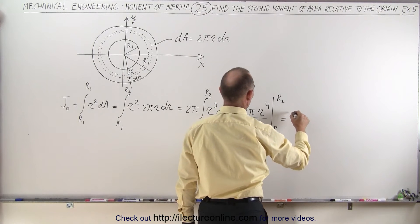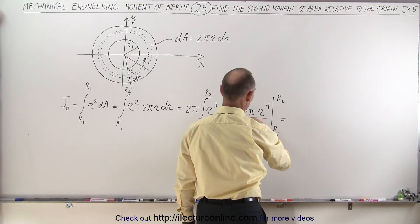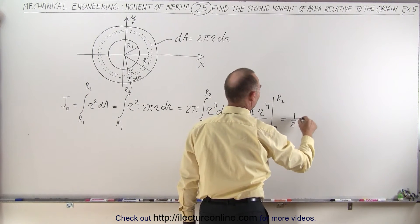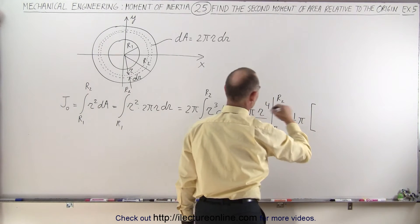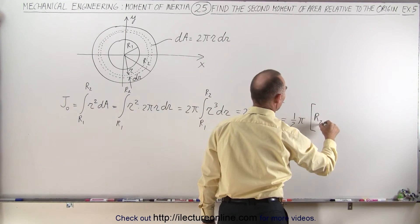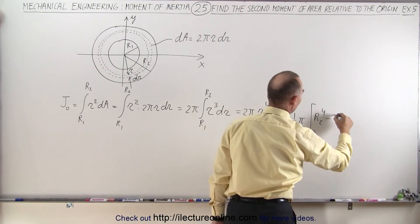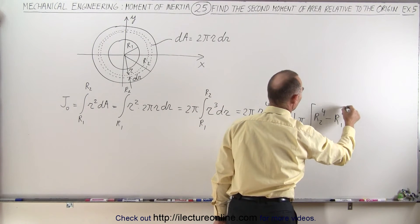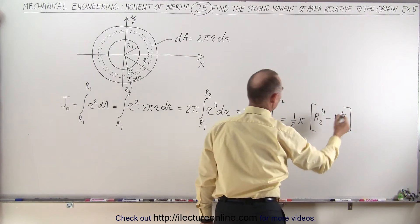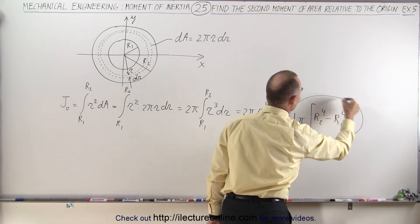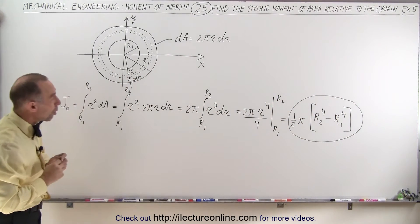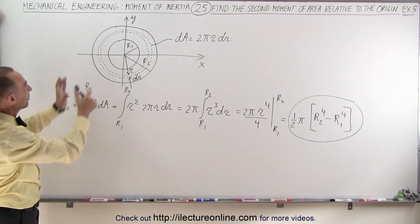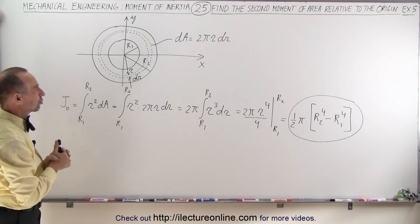Which is equal to — well, 2 divided by 4 is one half — so we get one half π times, plugging in the upper limit, the outer radius to the fourth power, minus, plugging in the lower limit, the inner radius to the fourth power. And this is what we call the second moment of area of that annular structure.